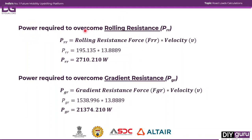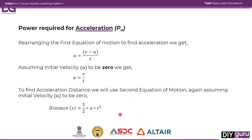Similarly, rolling resistance power is rolling resistance force multiplied by vehicle velocity, giving us the power required to overcome rolling resistance. For gradient resistance, gradient resistance force multiplied by velocity gives the power required to overcome gradient resistance.